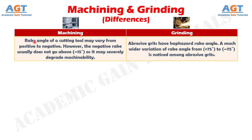Number 5: in machining, the rake angle of a cutting tool may vary from positive to negative. However, the negative rake usually does not go above minus 15 degrees as it may severely degrade machinability, whereas abrasive grits have a haphazard rake angle. A much wider variation of rake angle from plus 75 degrees to minus 75 degrees is noticed among abrasive grits.